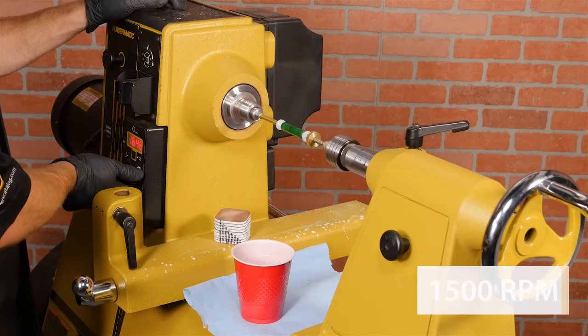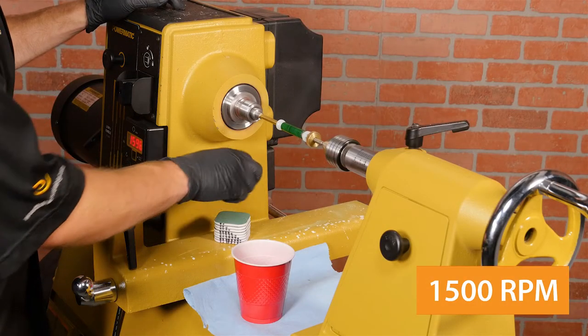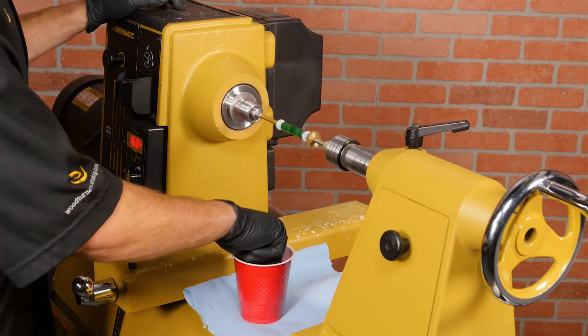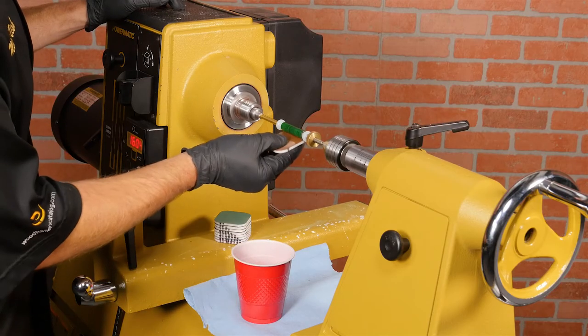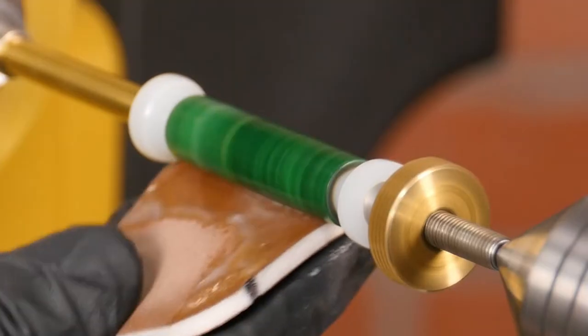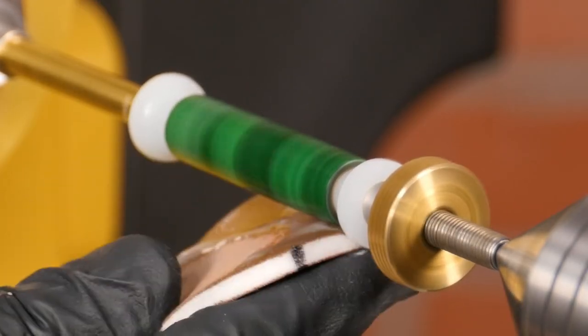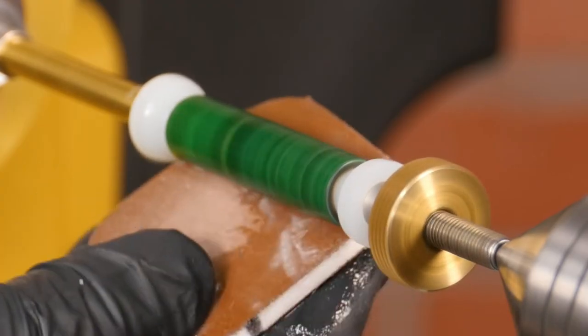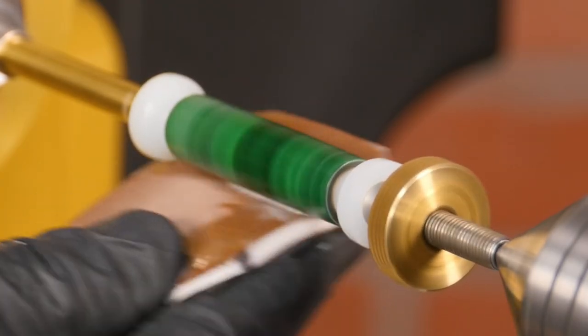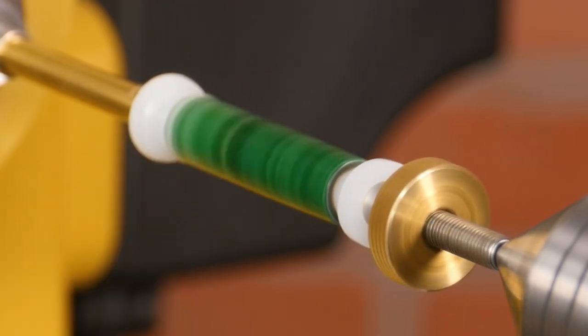Turn the lathe speed up to around 1500 RPM and grab the first microsurface finishing pad, then dip it in some water and wet sand the blank. The pressure should be light enough that the pad doesn't deform around the blank. Keep the pad moving and occasionally re-wet it to rinse it off and keep the blank cool.